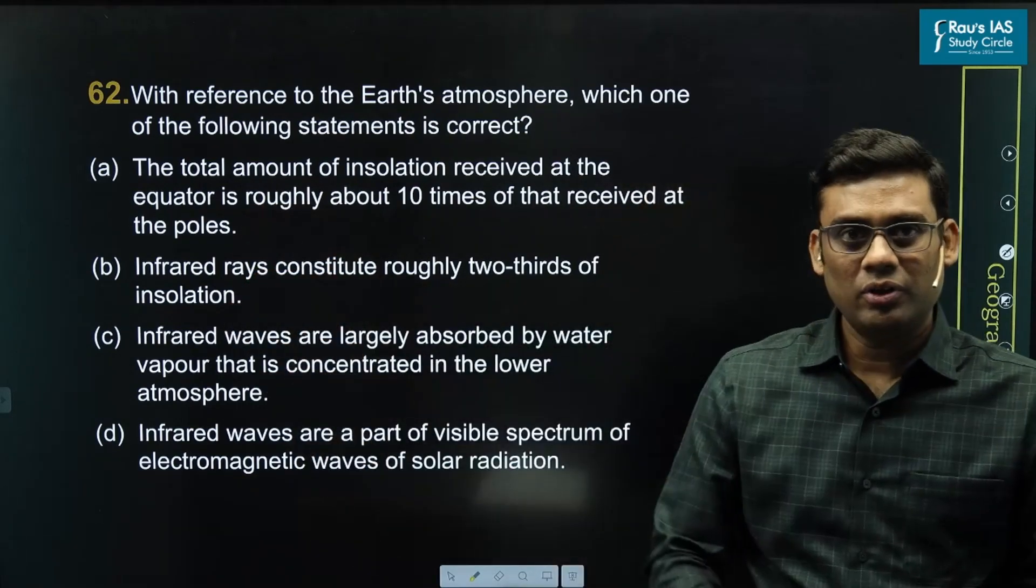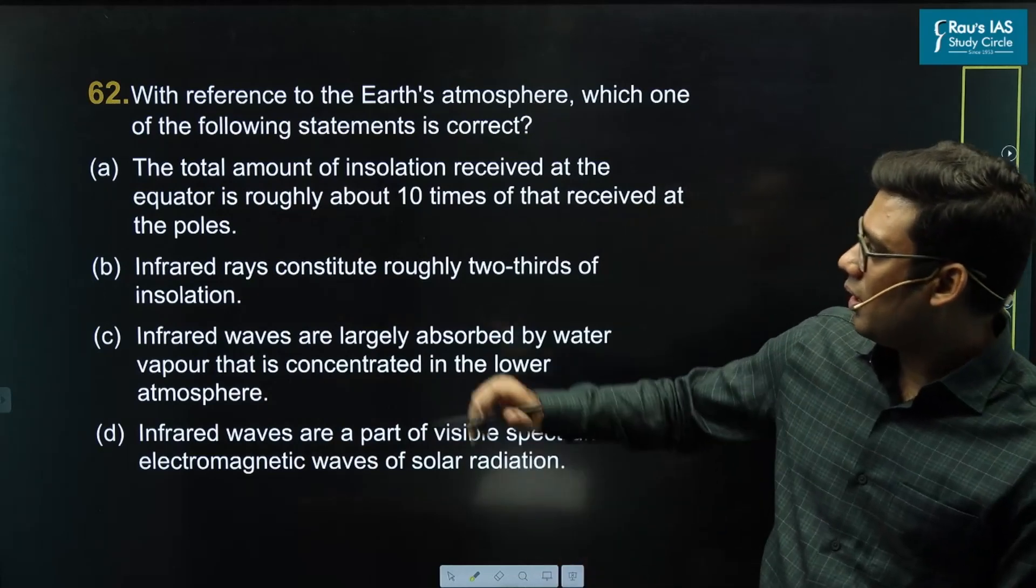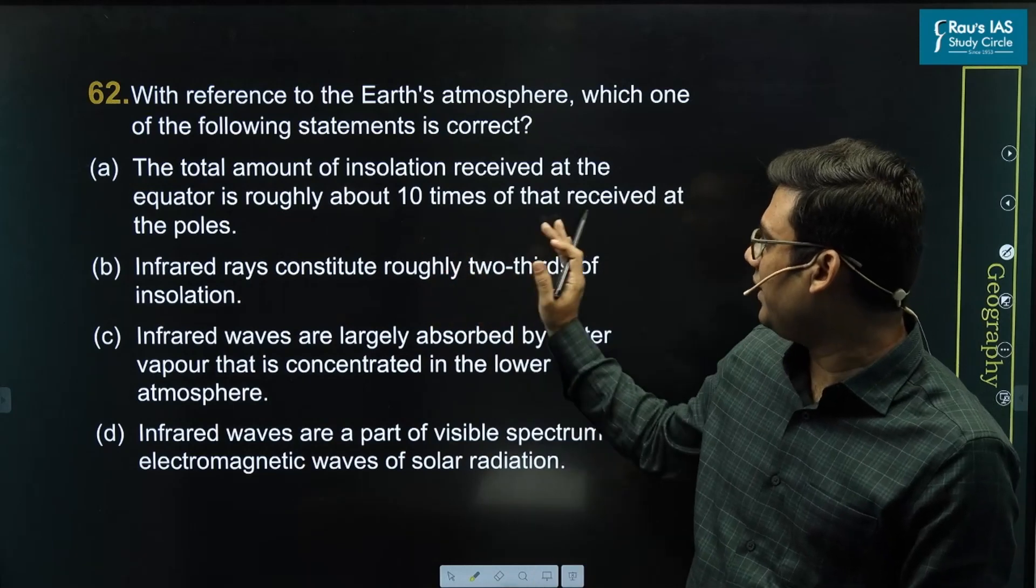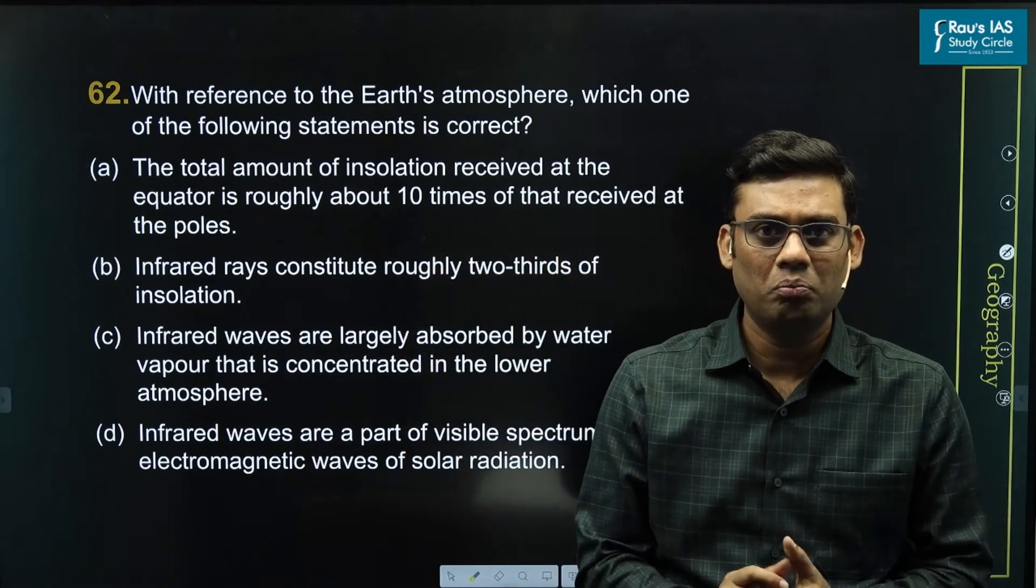The question talks about insolation. The first statement says the total amount of insolation received at equator is roughly 10 times of that received at the poles.